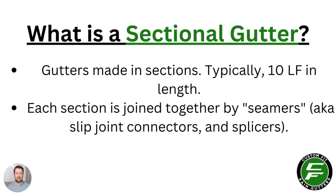Now what is a sectional gutter? Sectional gutters are gutters that are made in sections. If you go to buy them at the store — like any of the home improvement stores — you'll typically find them in about 10-foot sections. Each section is then joined together by what they call seamers in the gutter industry, and the manufacturers we use usually call those slip joint connectors or splicers.